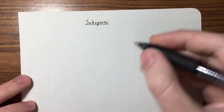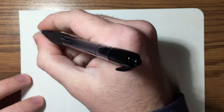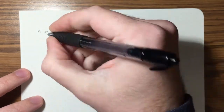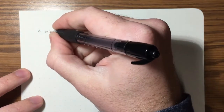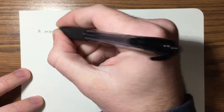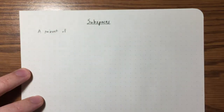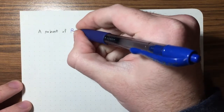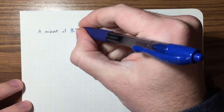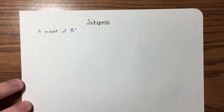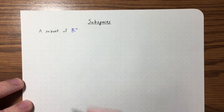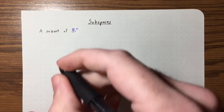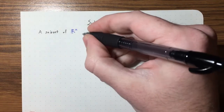So what do we mean by subspace? First of all, it's a subset of Rn. A subset of Rn might be a subspace, it might not. A subspace will require a bit more than just being a subset — it has more structure.